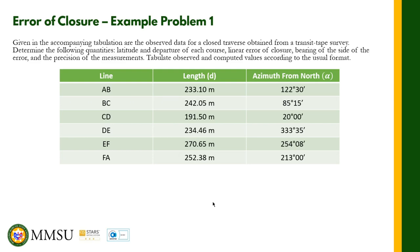We know how to solve for the latitude and departure already. But here we are given azimuth from north. If the given angle is azimuth from north, the trick is we just get the cosine of whatever angle is given to get the latitude — we multiply the length times the cosine of the azimuth. We do not worry about the sine separately, since the sign will come automatically.